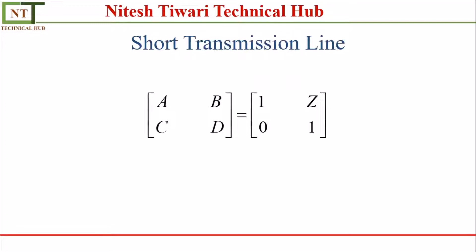I want to demonstrate what the ABCD constants are. If you don't already know the values of the ABCD constants for the short, medium, and long transmission lines, you can refer to any reference books. The type of transmission line is chosen depending on the length of the line, or we can say the length and frequency of the line.